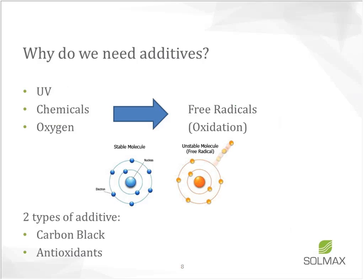There are factors that will influence the geomembrane and make it age or oxidize — UV, chemicals, and oxygen all oxidize geomembranes. Just like metals, geomembranes oxidize, which means there's a creation of free radicals in the molecules. HDPE geomembranes are made about 97% of actual resin. The remaining 2–3% is additives: carbon black — a black pigment that attracts and absorbs UV rays so they don't attack the polymer — making up 2–3%, with the balance being antioxidants.